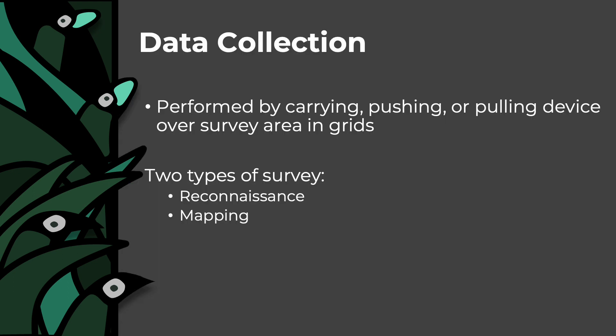Magnetometer survey is performed by carrying, pushing, or pulling a magnetometer instrument back and forth within grids that have been laid out over the ground. Tapes and ropes are used to guide the operator in this process and to ensure the entire area is covered. Archaeologists often differentiate between two types of survey methodology: reconnaissance and mapping. Reconnaissance is where a large area is surveyed at lower resolution to identify the general location of a large target of interest, for instance like a cemetery. Mapping surveys are used to cover smaller areas at higher resolution to map the distribution and number of individual features, for instance like graves within them.